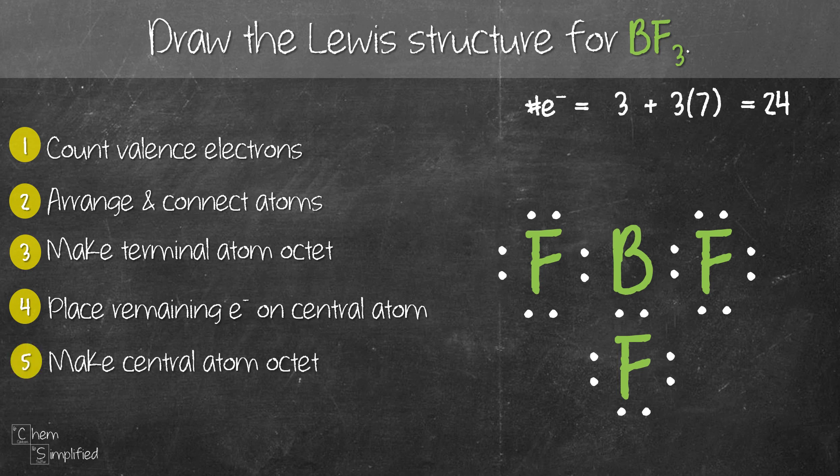The next step is to make the central atom octet. However, boron is an exception and is perfectly happy with just 6 electrons. It doesn't need to be octet. So we skip this step, and with that, we're done drawing the Lewis structure for BF3.